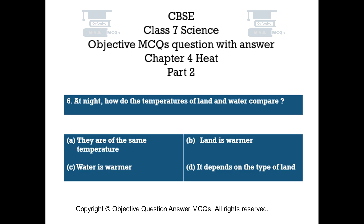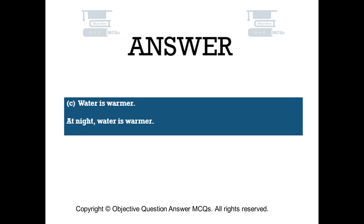Question number 6. At night, how do the temperatures of land and water compare? Option A: they are of the same temperature, Option B: land is warmer, Option C: water is warmer, Option D: it depends on the type of land. The right answer is Option C — Water is warmer. At night, water is warmer.